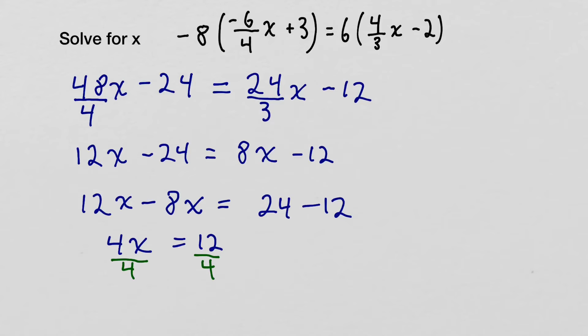Well, 4 divided by 4 is 1, because anything divided by itself gives us 1. So that leaves us with x equals 12 over 4. Well, x equals 12 divided by 4, you can simplify that, because 12 divided by 4 is 3. So we end up getting x equals 3. And that is our final answer.